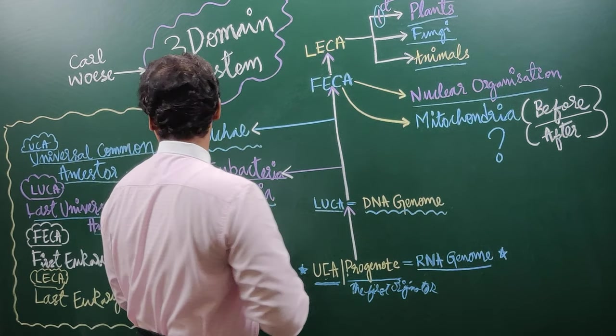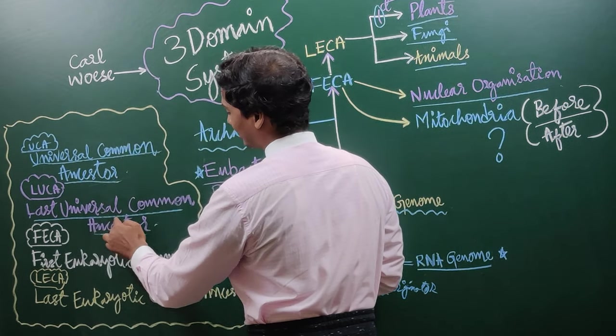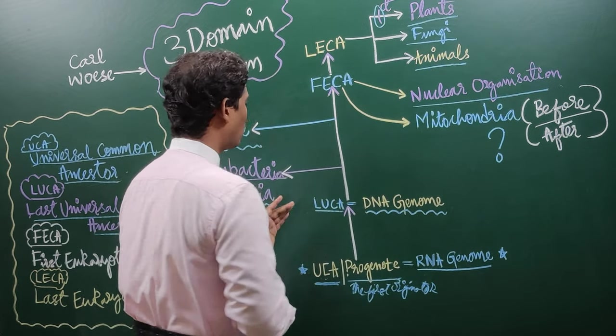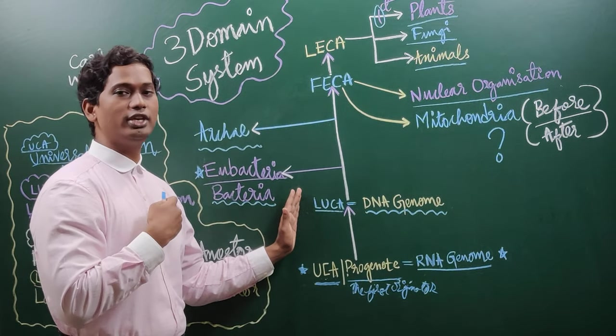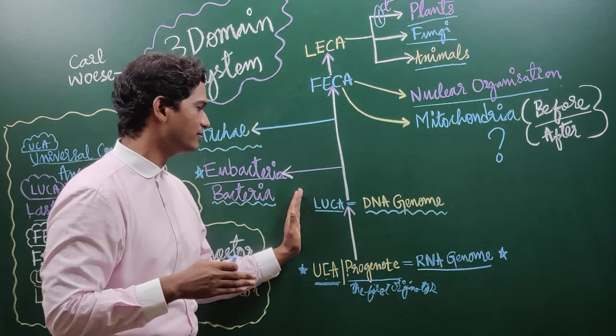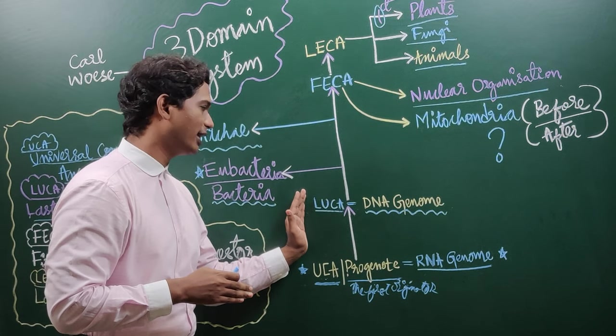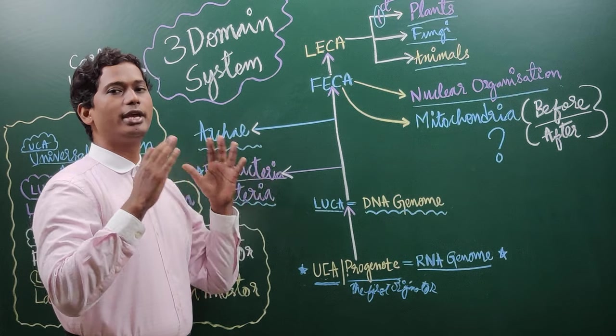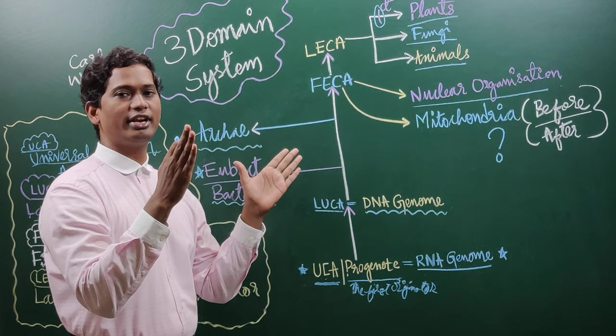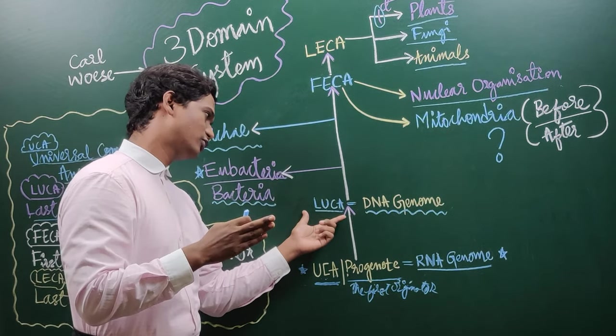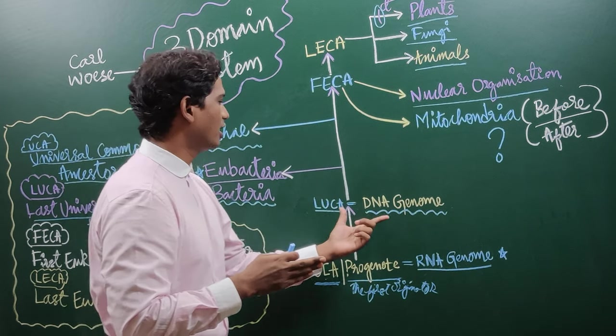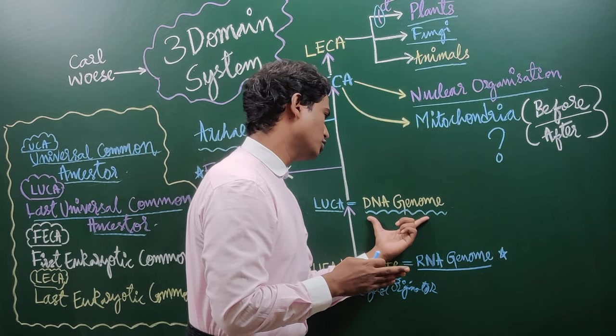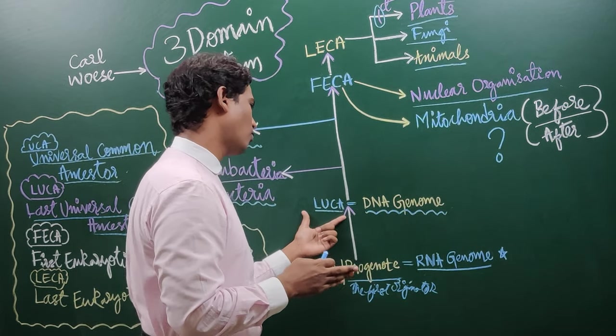LUCA means last universal common ancestor. This was the last time we and all the organisms were having a common ancestor. From here, the organisms began to be different from each other. This last universal common ancestor had a DNA genome.